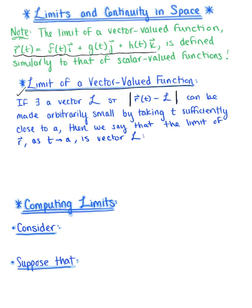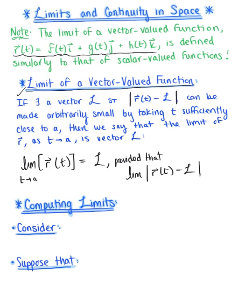So what are we saying here? We're just saying that the limit of the vector-valued function r(t) as t approaches a equals vector L. This is provided that the limit of the absolute value of vector r(t) minus vector L as t approaches a is equal to zero. That's our formal definition for the limit.